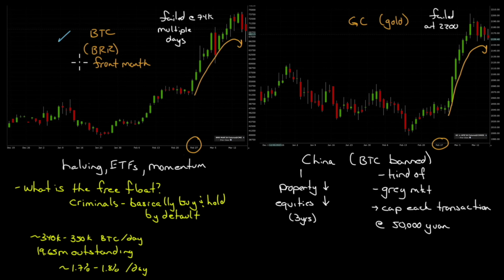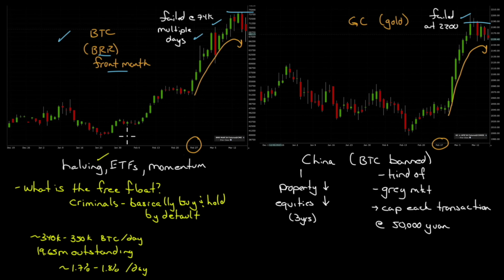One more set of charts — kind of look the same, don't they. You have Bitcoin here — more correctly BRR, the front month on Bitcoin futures — and gold, the front month on gold. Whatever's going on is happening to both of them at the same time. Failed at $2,200; failed at $74,000. Here's your $74,000 level — failed there, peaked a couple times. Here's your $2,200 level — peaked over there a couple of times but failed on multiple days for both.